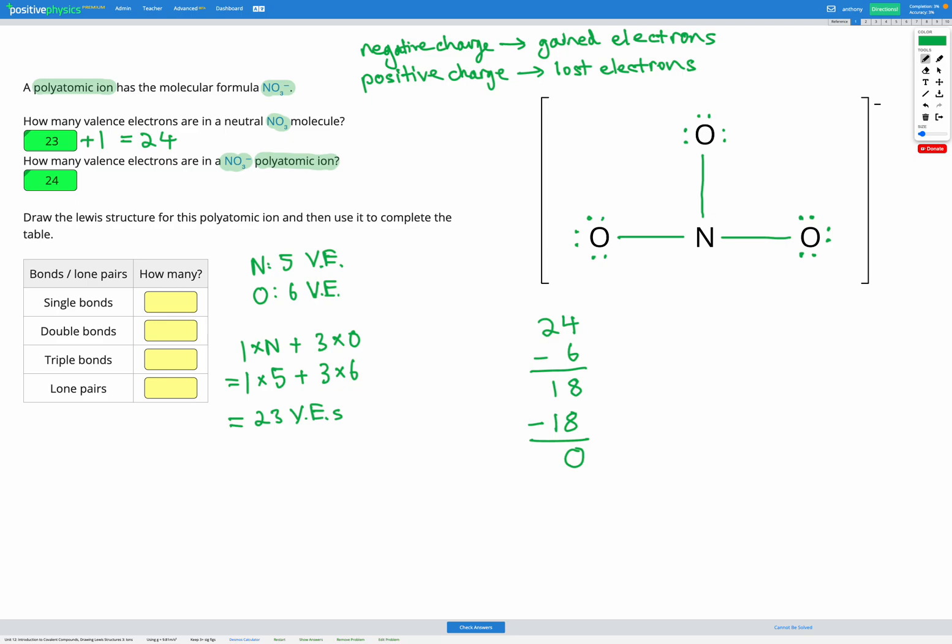Our last step is to check that our atoms obey the octet rule. So currently, our 3 oxygen atoms do obey the octet rule, since they've got 3 pairs of lone electrons and 1 covalent bond, which each provide 2 electrons for a total of 8. The nitrogen, however, has 3 covalent bonds with 2 electrons each, so a total of 6 electrons. But it needs 8 in order to obey the octet rule.